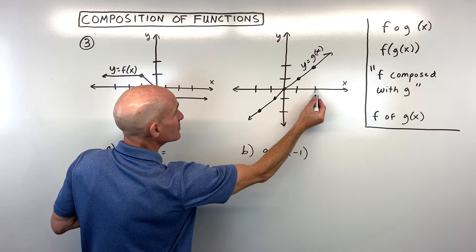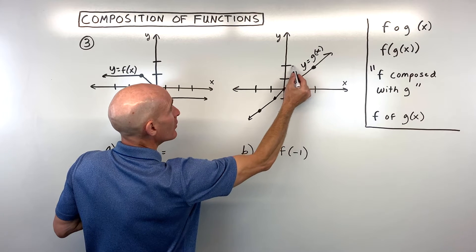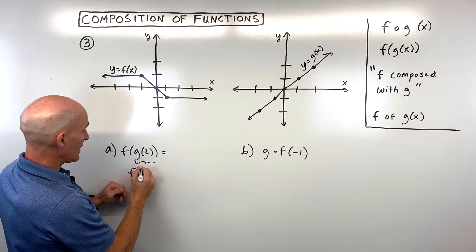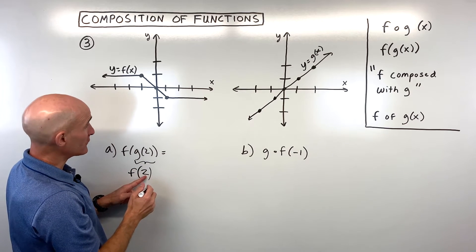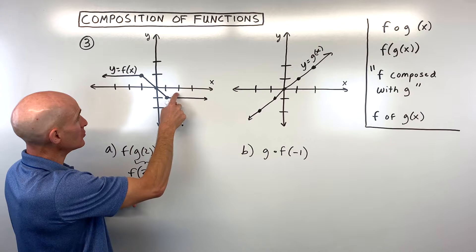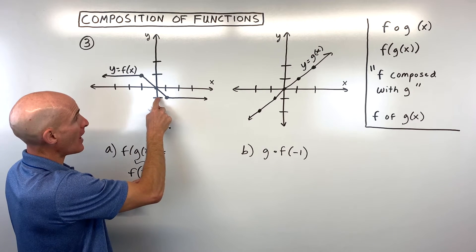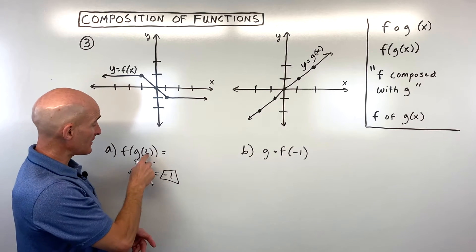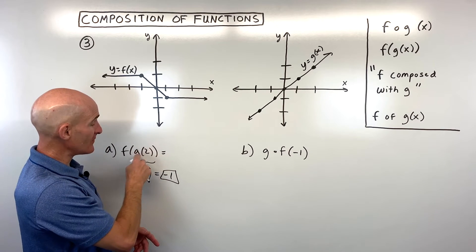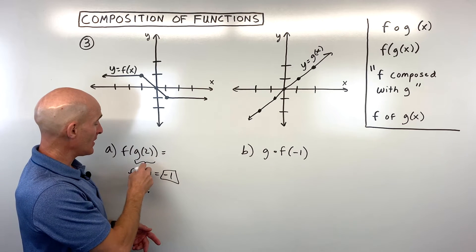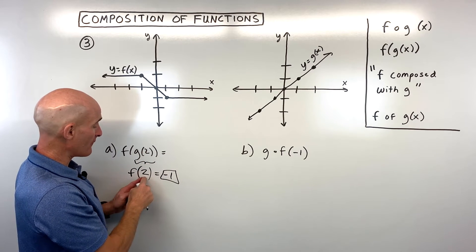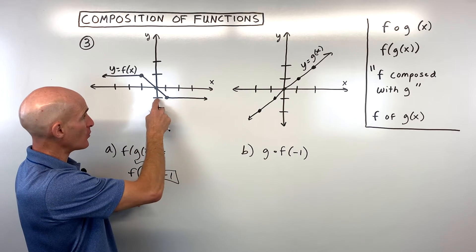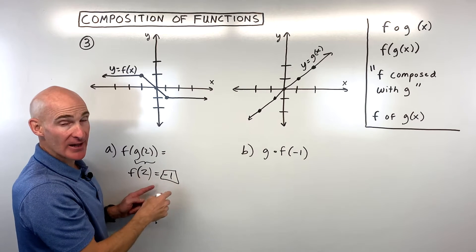When x is 2, we go up to the graph and our y value is 2. Now we say f of 2: we go to our f function when x is 2, and our y value is negative 1. So it's two steps — starting on the inside, this is your x value, g of x gives the y value, then that output becomes the input in f, giving the final y coordinate.